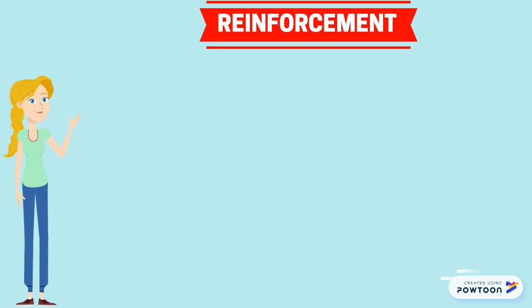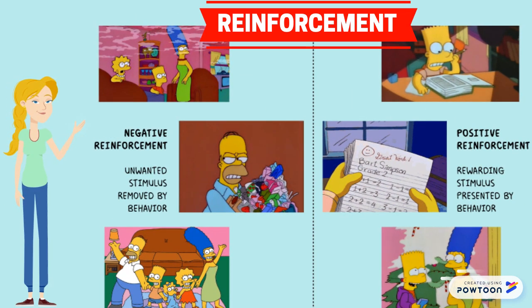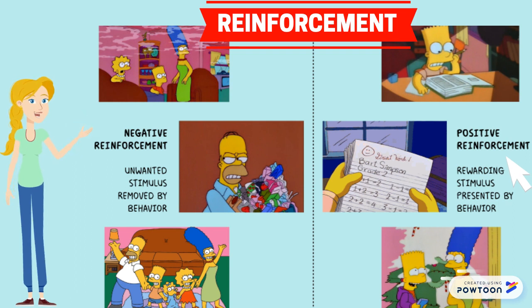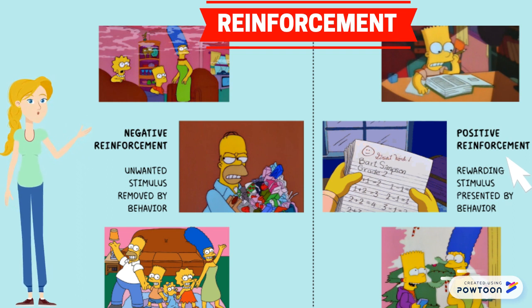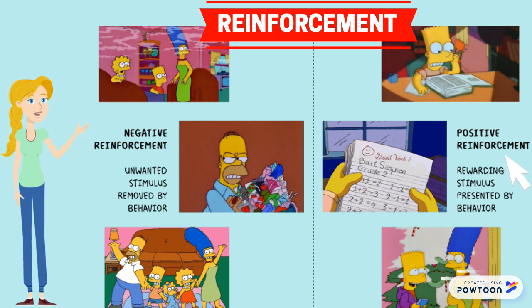Let's look at an example for positive reinforcement. Let's say that Bart knows that he will get rewarded if he gets a good grade on his exams. So Bart decides to work hard and achieve a really good grade. As a result, his mum rewards him with a present.